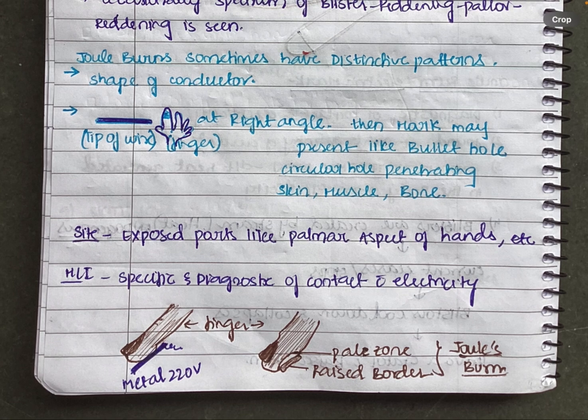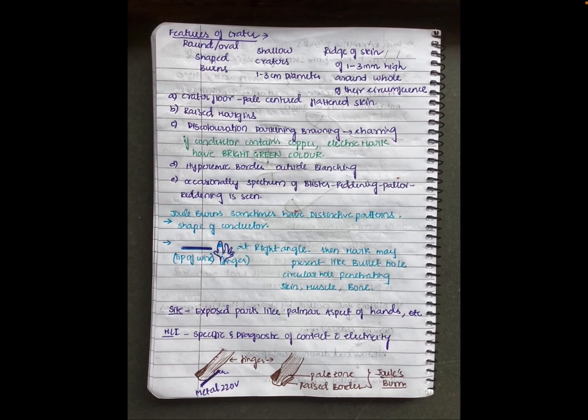The medico-legal significance is that joule burn is specific and diagnostic of contact with electricity. If you see a joule burn, it is certain that the person has been in contact with electricity. In the picture, the first image shows a finger in contact with an electric wire showing a joule burn with a central pale crater surrounded by a raised rim.